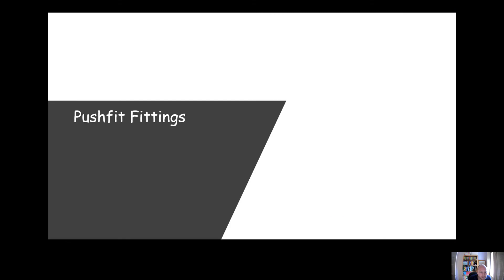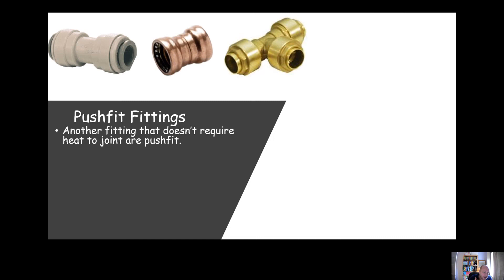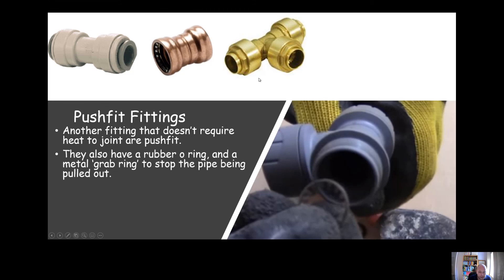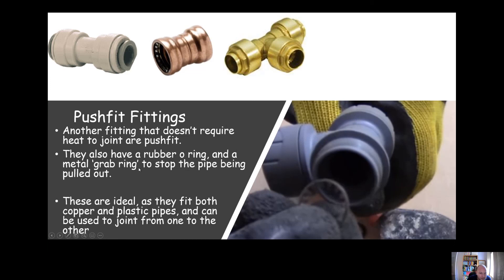Push fit fittings are another fitting that doesn't require heat to create the joint. You can see a few examples of push fit fittings. They can look very different, but in general they all work the same way. They've got a rubber o-ring inside them, they'd have a grab ring like you can see on this middle one up here with the teeth pointing backwards. That way, once you've pushed the pipe in, those teeth essentially stop the pipe from being pulled out, and the rubber o-ring will help keep it watertight. There's various ways of removing them depending on the material. You can see the grab ring just here in this picture as well. Easy to fit, fairly easy to remove generally speaking.